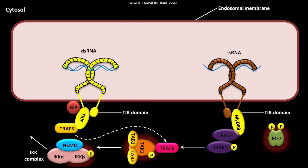A complex is formed in which inactive NF-KB is bound to IKB. IKB retains NF-KB in its inactive form. Activated IKK phosphorylates IKB. The phosphorylated IKB then undergoes degradation, causing the inactive NF-KB to become active.